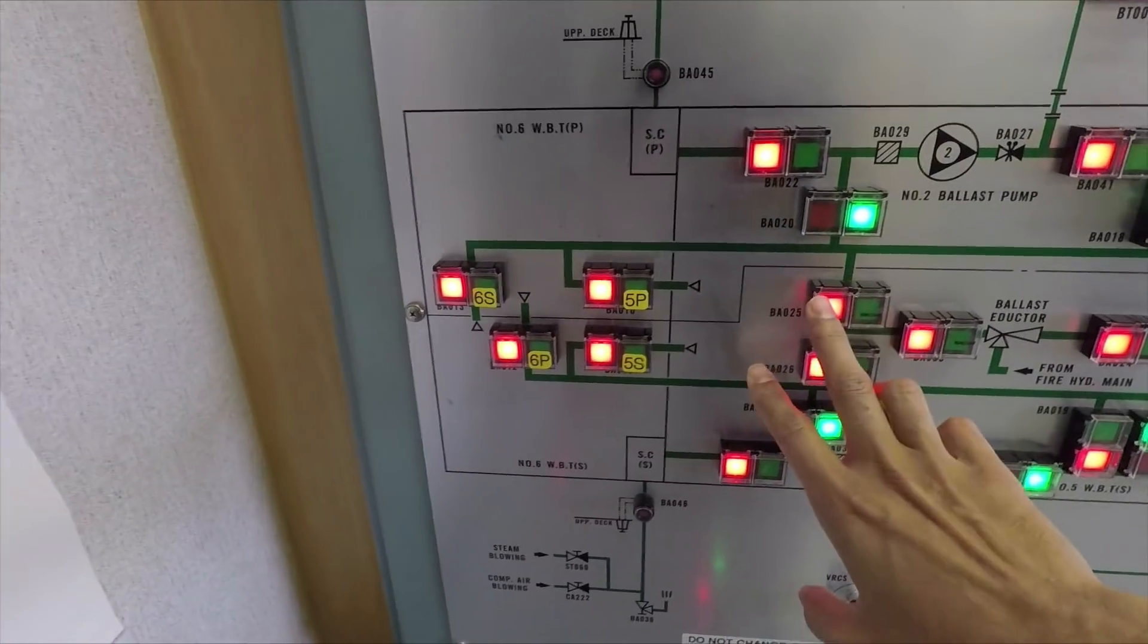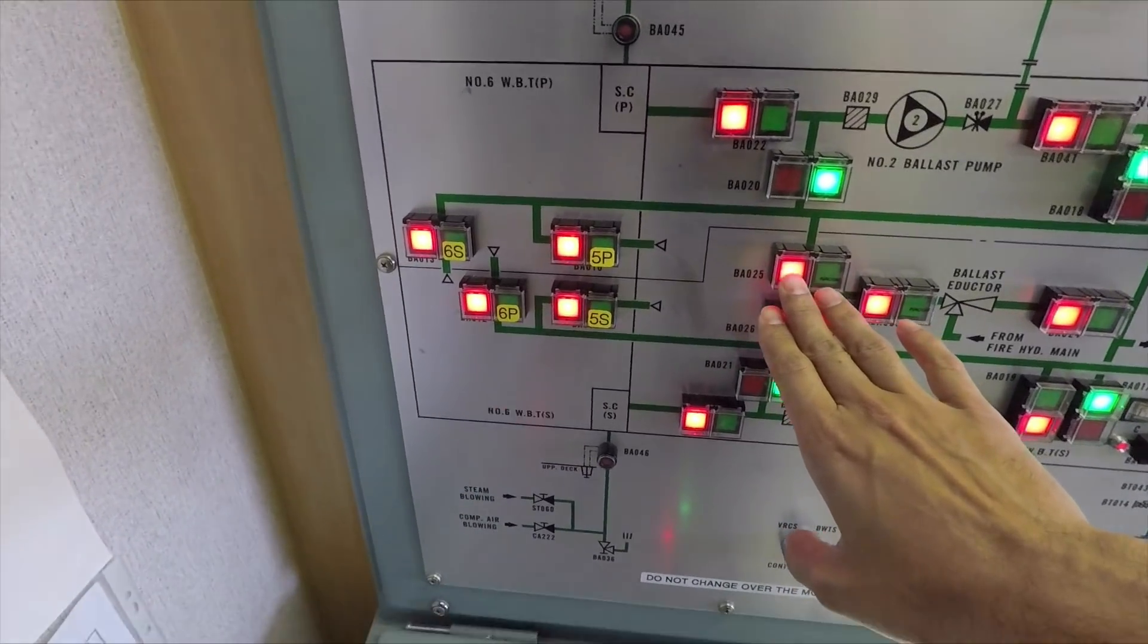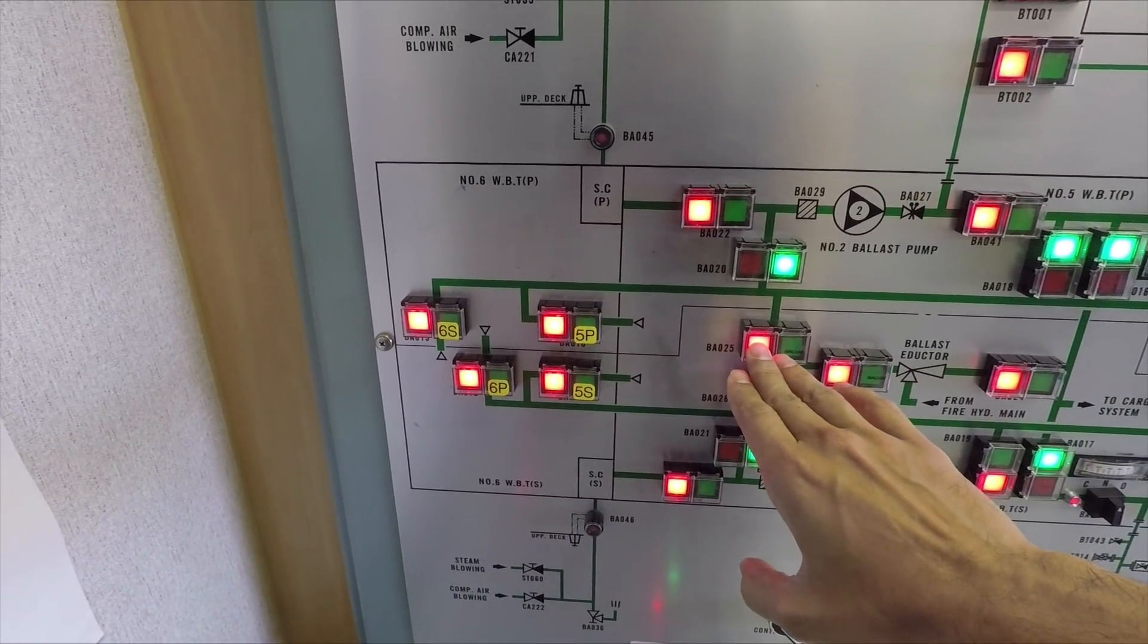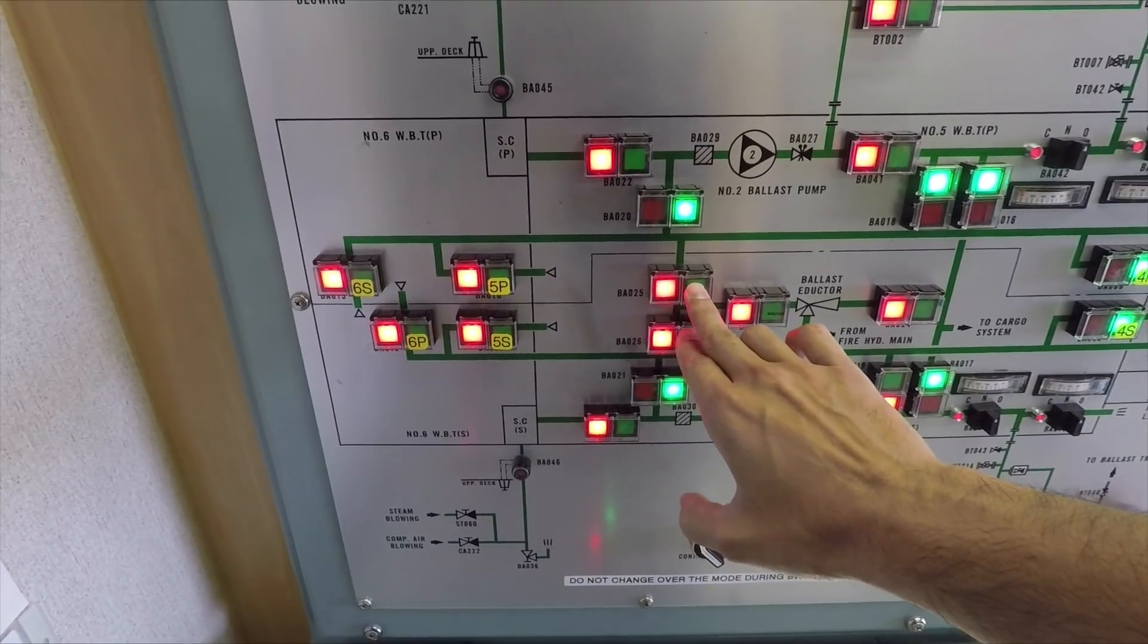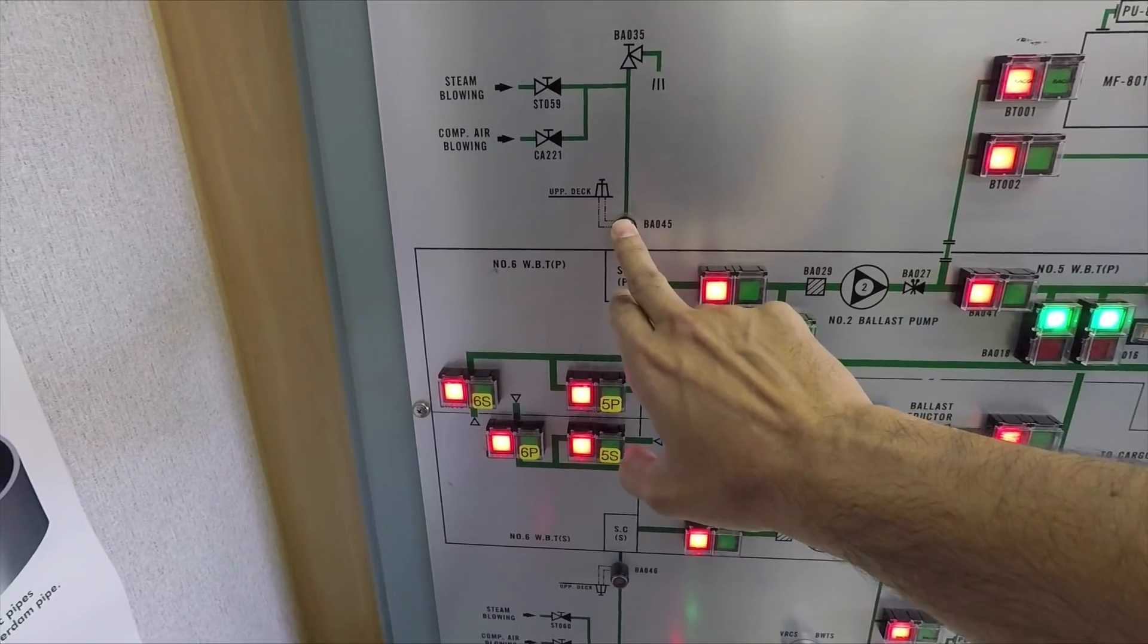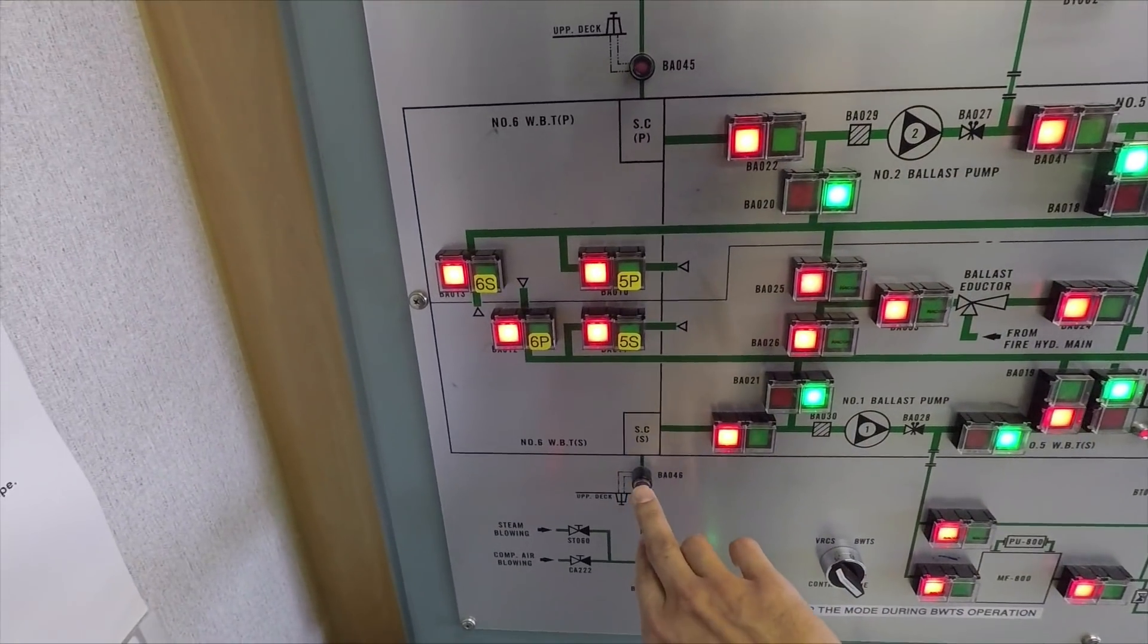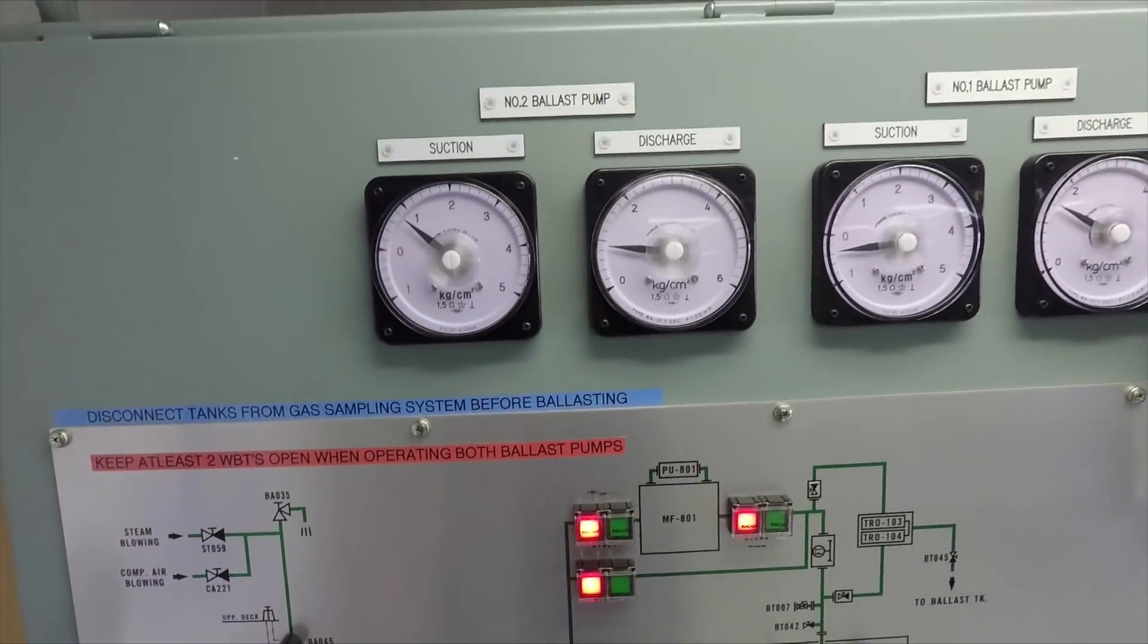Apart from this, we also have a fore peak tank and an aft peak tank. So these red and green what you see are the valves. These are hydraulic valves. When you press the red button, the valve closes, and when you press the green button, the valve opens. Apart from these hydraulic valves, these indicators you see here, they are manual valves to be opened from deck. Here it's only an indication, nothing more than that. We also have these gauges which show ballast pump suction and discharge pressures.